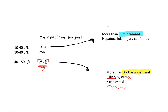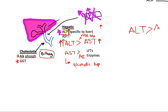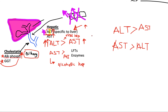The ratio is important. ALT raised way more than AST indicates viral hepatitis. AST raised more than ALT indicates alcoholic hepatitis. Just an alkaline phosphatase increase alone does not mean there is specifically liver damage, because ALT and AST are the most specific to the liver — and most specific of all is ALT.